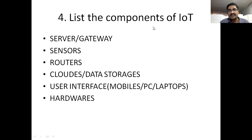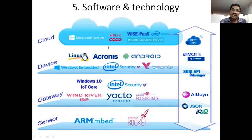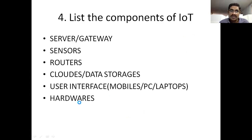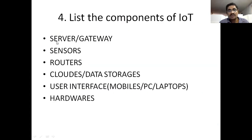Components of IoT: server — the IoT server is also known as a gateway. Next: sensors, routers. Next: data storage, also known as cloud. Next: user interface — mobiles, PCs, and laptops — these three are called user interfaces. And hardware. In this slide: sensors, routers, clouds, user interfaces, and hardware are the key components. Microsoft Azure, Helix, Voice Pass, and Intel are a few software companies to develop this cloud component of IoT.